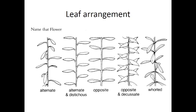Another important clue is how the leaves are arranged on the stems. The most common pattern is that leaves alternate up the stem, as in these first two illustrations here. The second one differs in that it's distichus, which means that the leaves are flattened in a single plane.